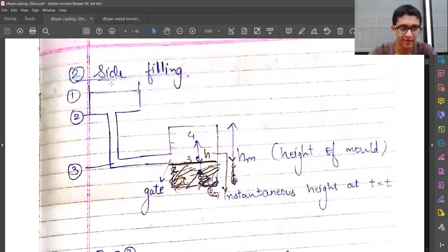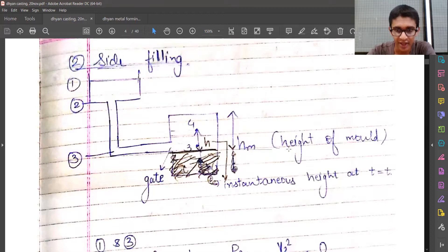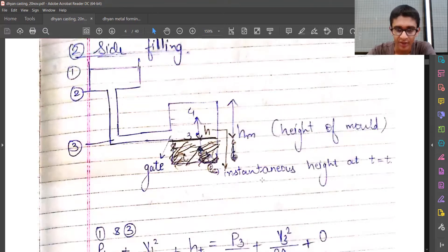The molten metal is poured on the top side, but when it enters the mold, it enters from the side—sidewards, meaning the vertical face, not the top face. hm is the height of the mold, h is the instantaneous height till which the metal has reached at time t. We have locations 1, 2, and 3, where 3 is the center of the gate.